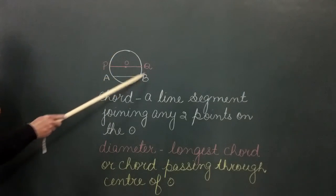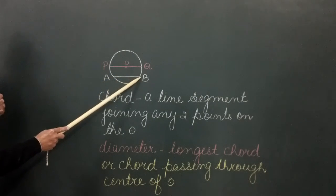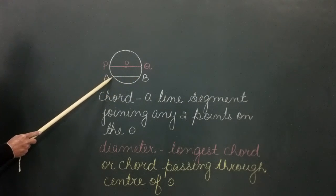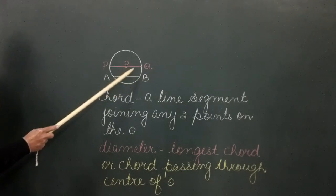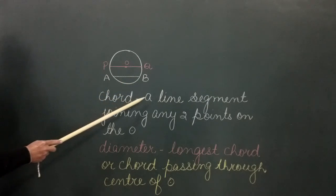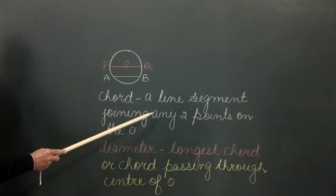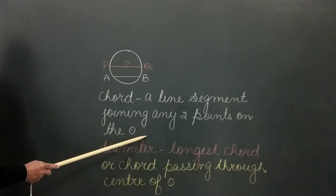We see a circle with a line segment AB joining points A and B on the circle. This type of line segment is called a chord. A line segment joining any two points on a circle is called a chord.